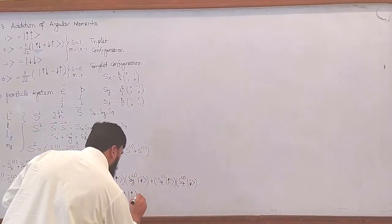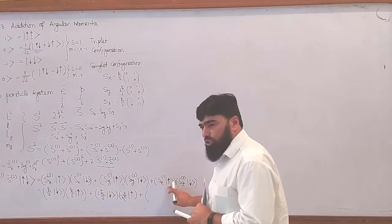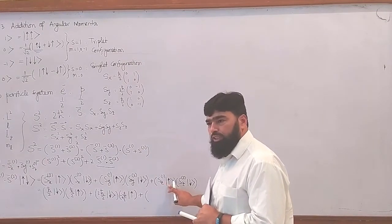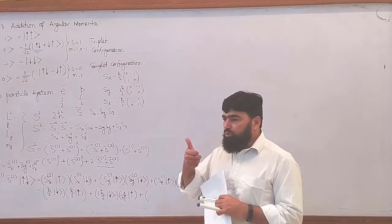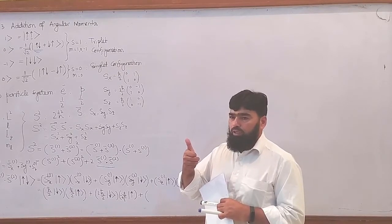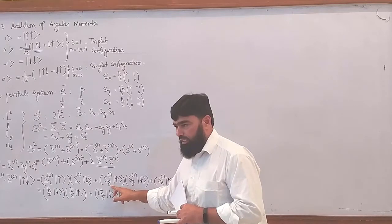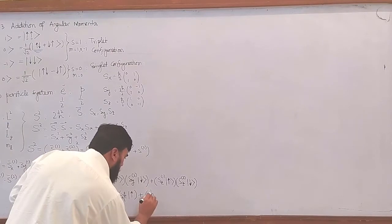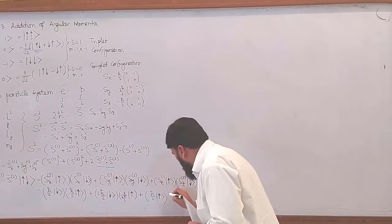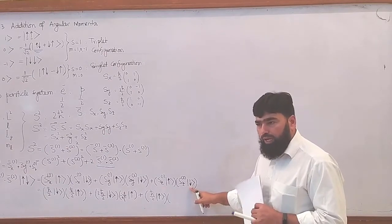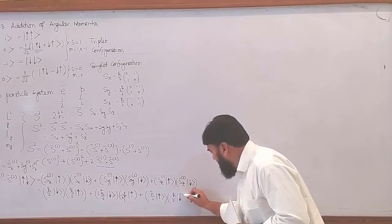Now what about Sz? Sz operates on spin-up — does it change the state? It is not changing the state, because Sz handles the orientation and it is not part of the lowering and raising operator. So we will only get h-bar over 2 and it will remain spin-up. Similarly for spin-down, it will give minus h-bar over 2 and it will remain spin-down.